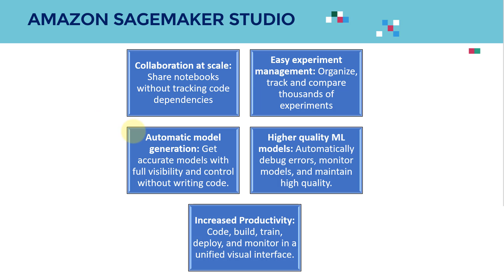Here are the five key features of Amazon SageMaker Studio. First is collaboration at scale — you can share notebooks without tracking code dependencies, making integration very easy and seamless. Second is easy experiments management — you can organize, track, and compare thousands of experiments in one place. For those who have done AI and ML projects before, managing all the experiments, hyperparameter tuning, and data across multiple locations can be a real headache, and SageMaker Studio integrates all of that into one place so you can innovate much faster.